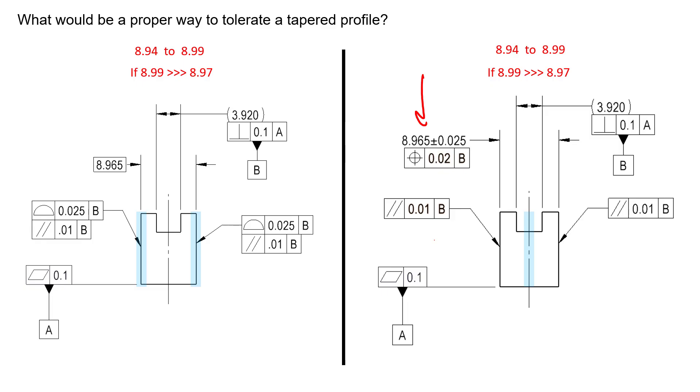One key aspect to both examples is we have nominally parallel surfaces. Both of these surfaces are nominally parallel—they are 180 degrees or zero degrees from each other. If that's the case, this holds true.